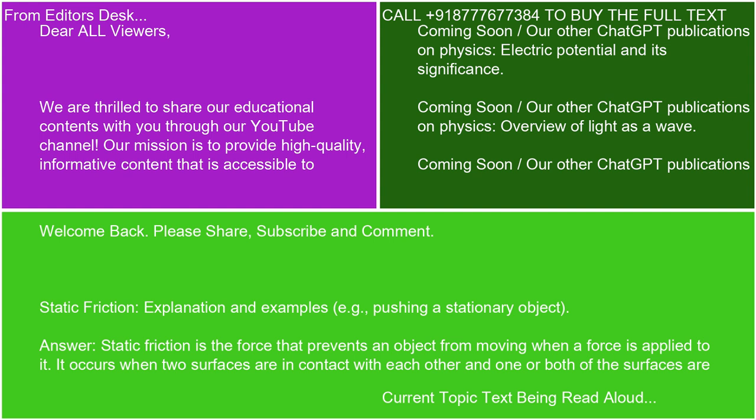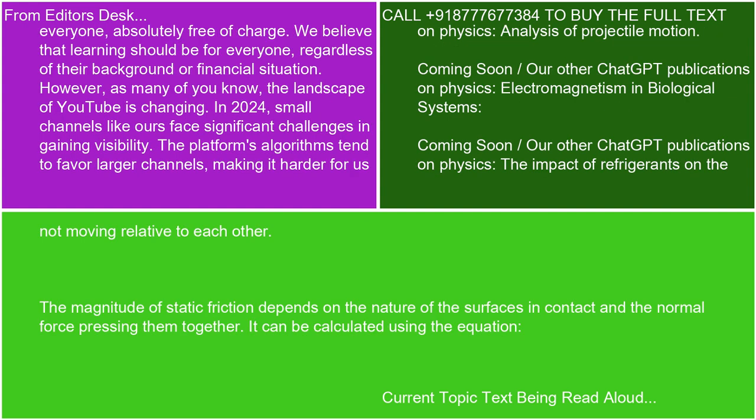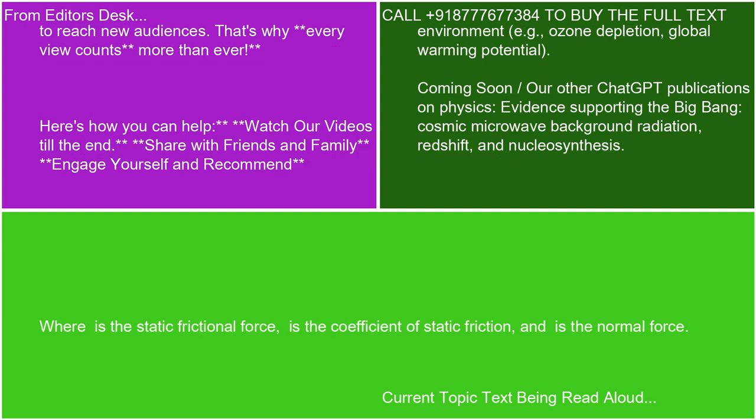Static friction is the force that prevents an object from moving when a force is applied to it. It occurs when two surfaces are in contact with each other and one or both of the surfaces are not moving relative to each other. The magnitude of static friction depends on the nature of the surfaces in contact and the normal force pressing them together. It can be calculated using the equation where the static frictional force equals the coefficient of static friction multiplied by the normal force.